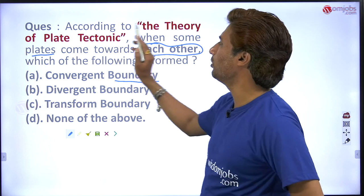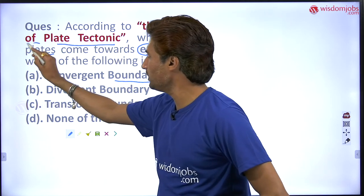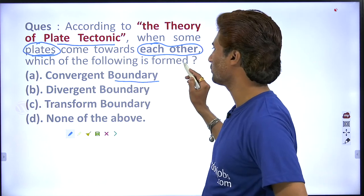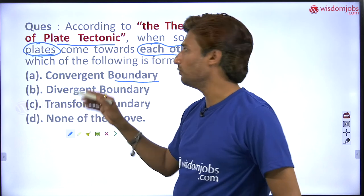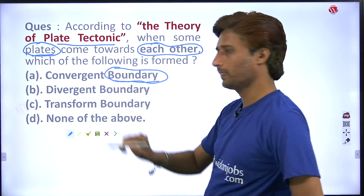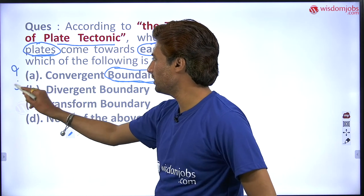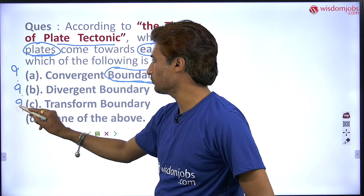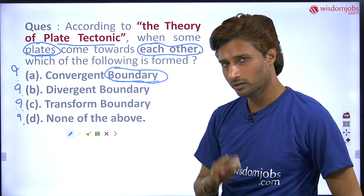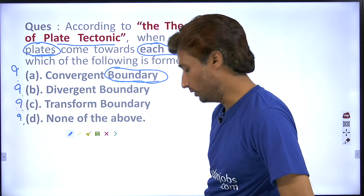According to the theory of plate tectonics, when some plates come towards each other, which of the following boundary is formed? Is it convergent boundary, divergent boundary, transform boundary, or none of the above? Let's check them out one by one.